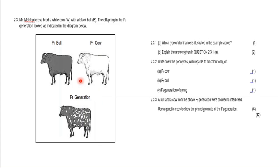With complete dominance, if you cross a brown-eyed and a blue-eyed person, the offspring will have brown eyes. Then there is incomplete dominance, which is when you have a mix of the two traits — for example, crossing a white flower with a red flower gives you a pink flower. Finally, you have co-dominance, which is when both phenotypes are expressed, as in this example where black and white are both expressed.